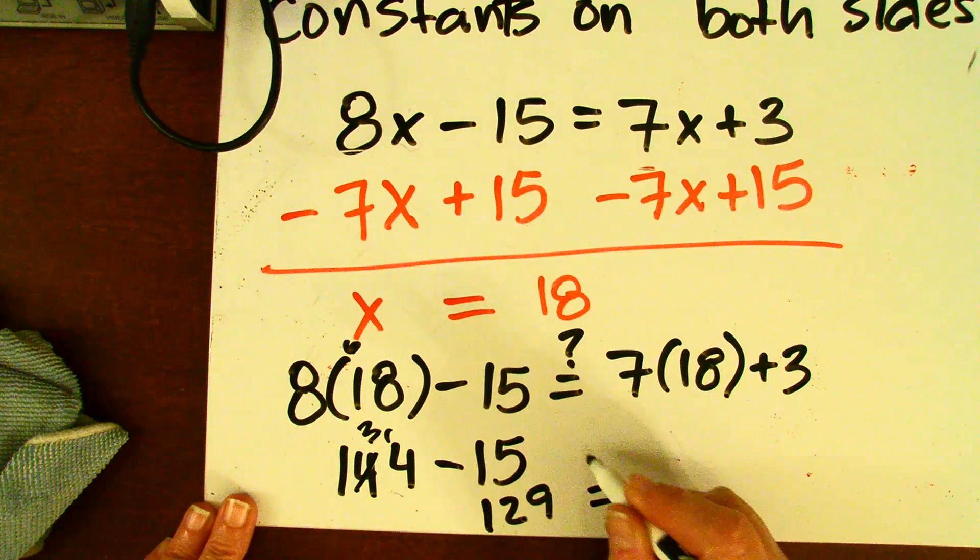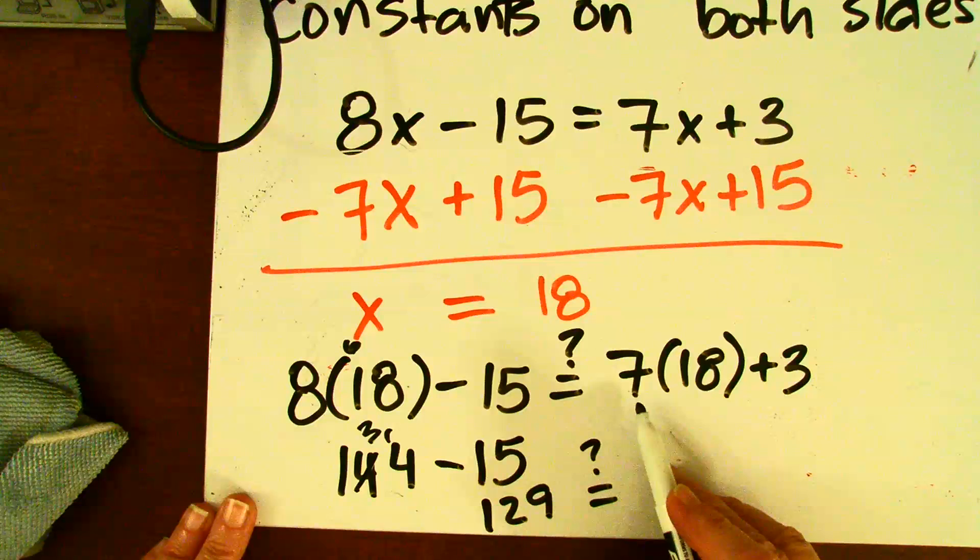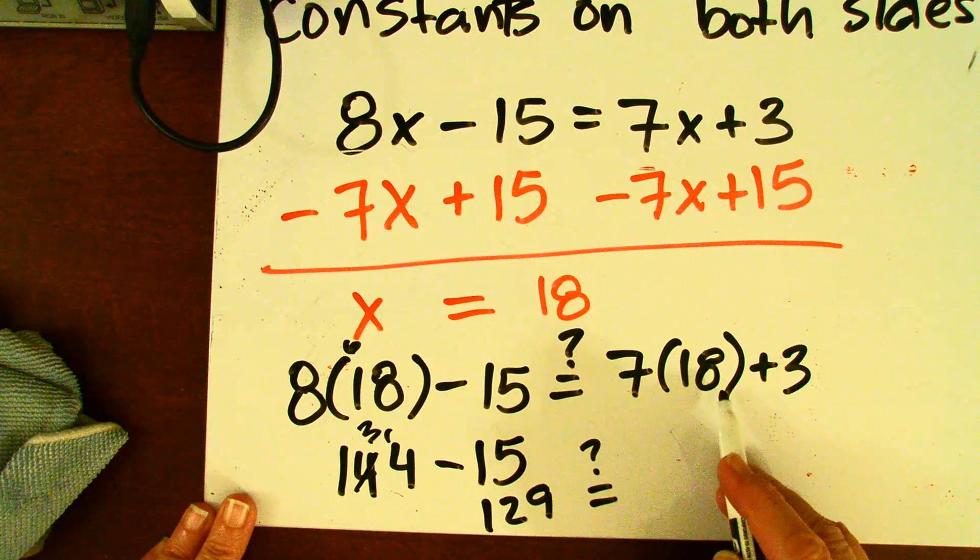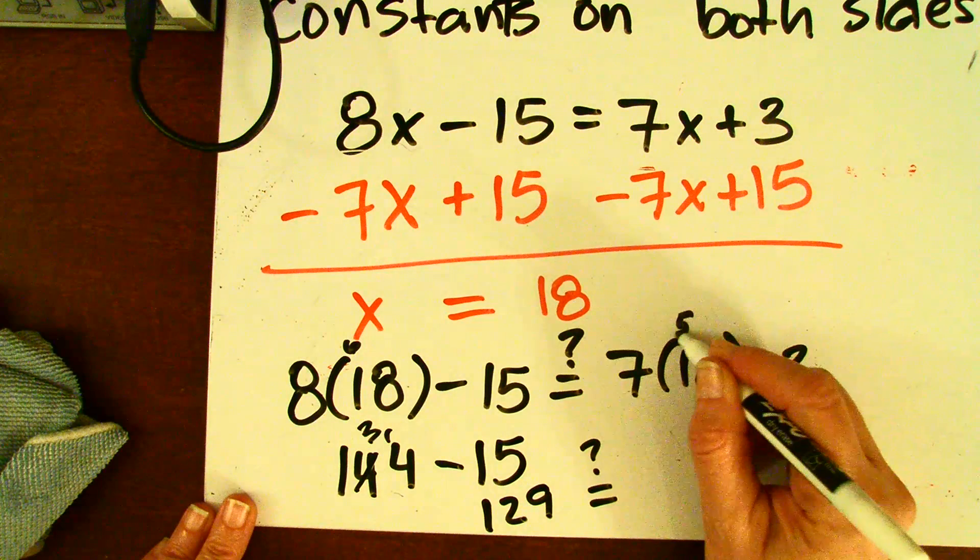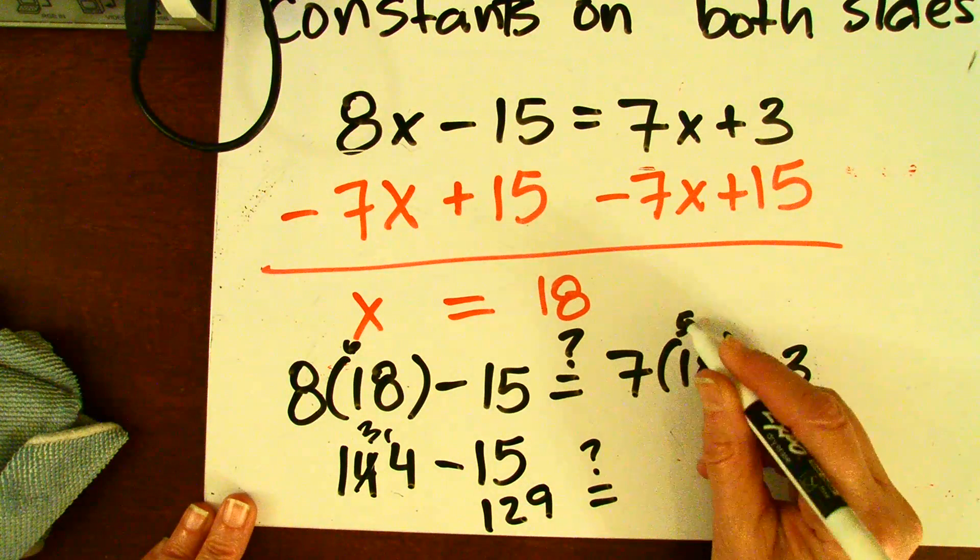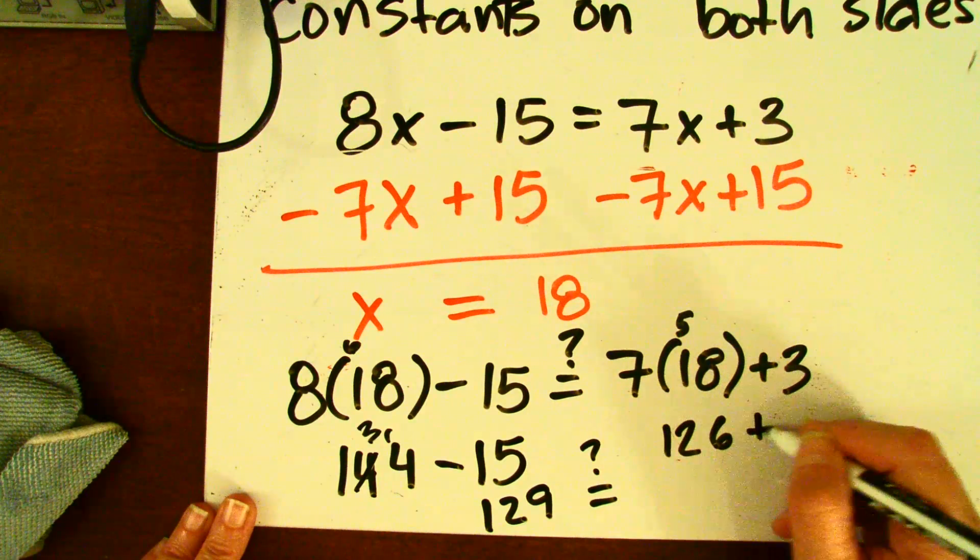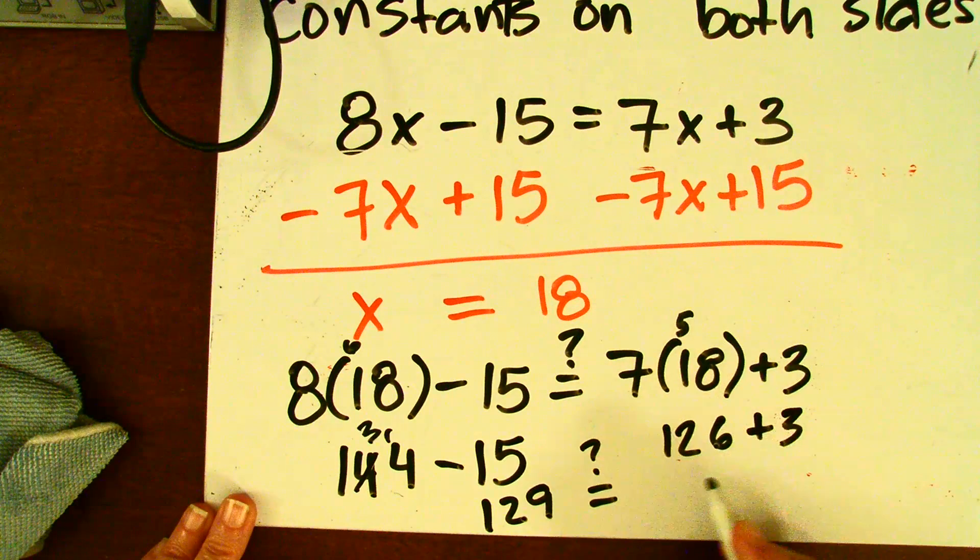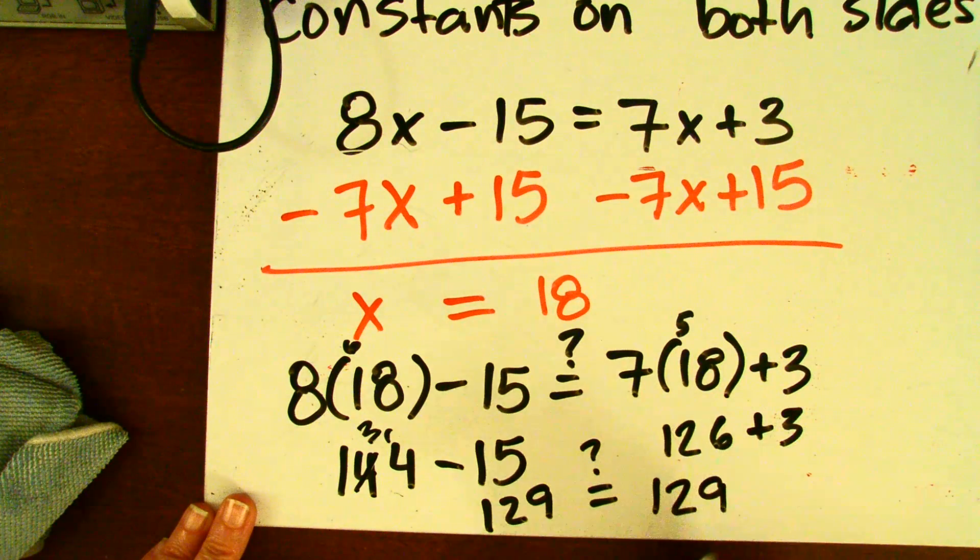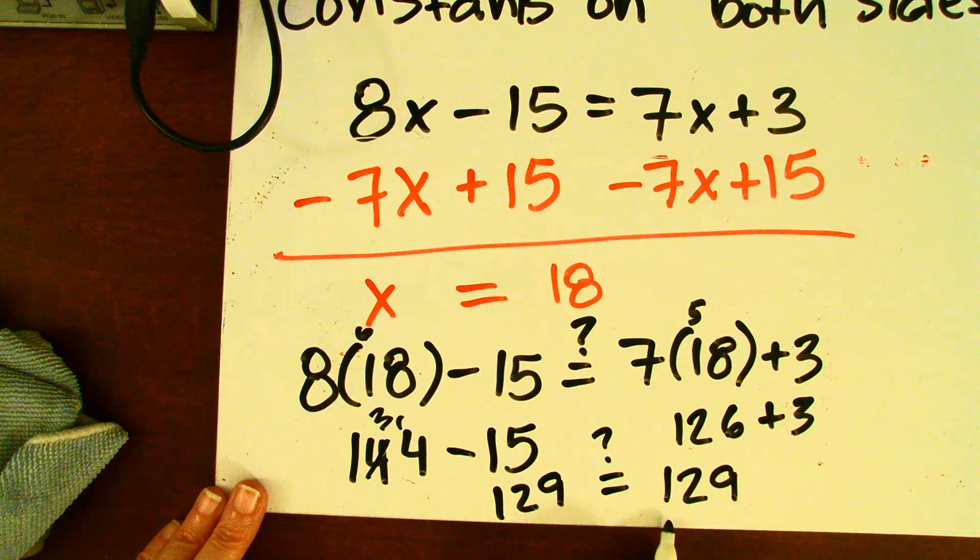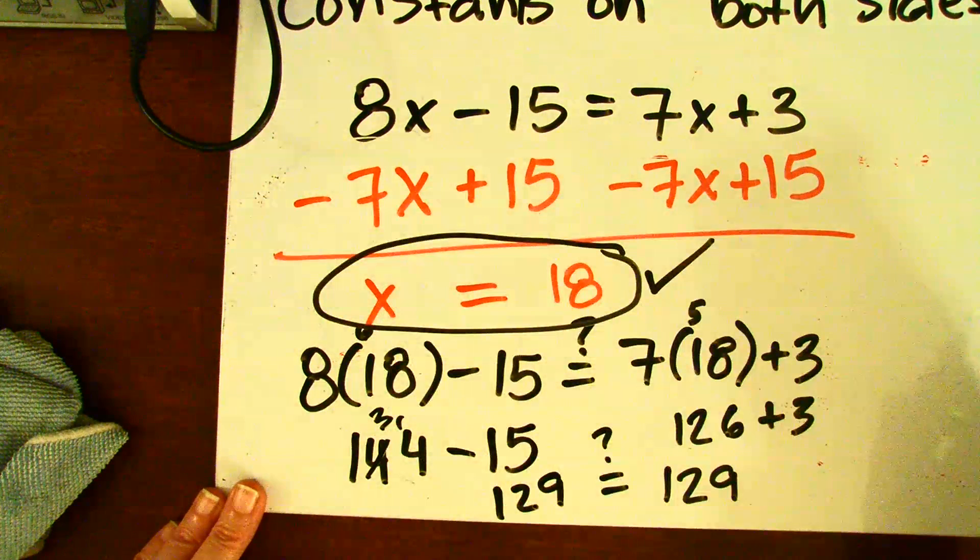Now, is that going to be equivalent to this side? Well, let's go ahead and multiply. 7 times 8 is 56. 7 times 1 is 7, plus 5 is 12, plus 3. 126 plus 3 is 129. Again, because these two are the same, x equals 18 is the solution.